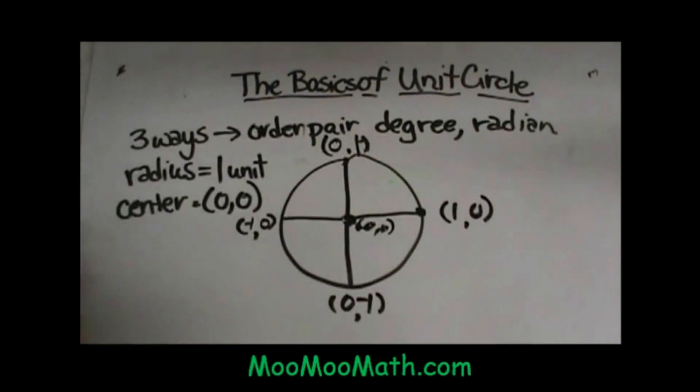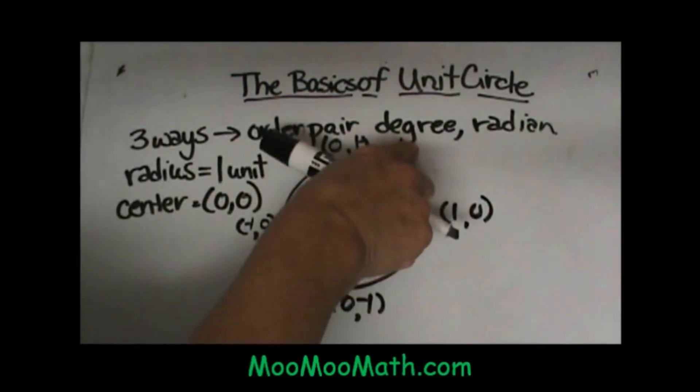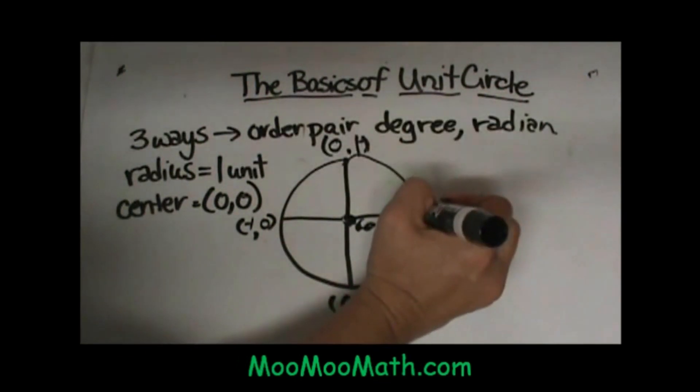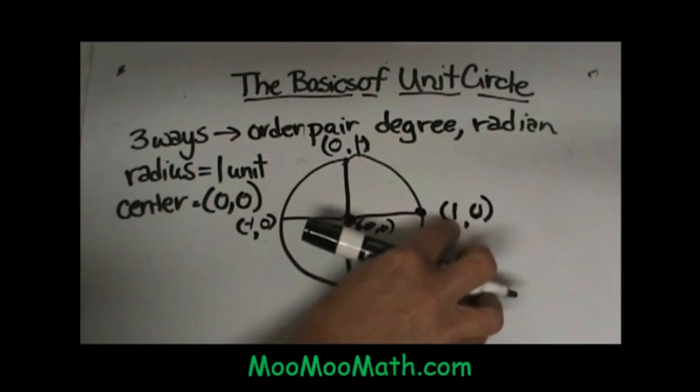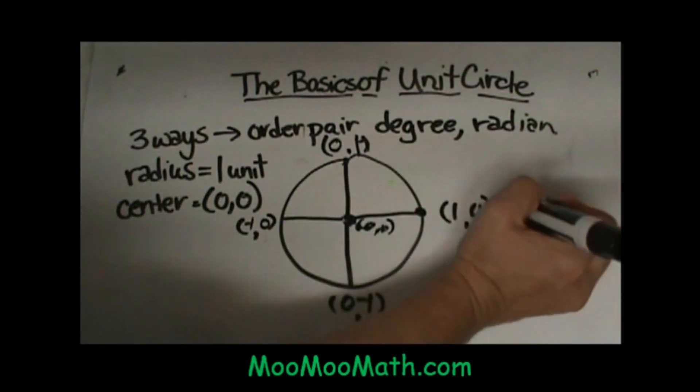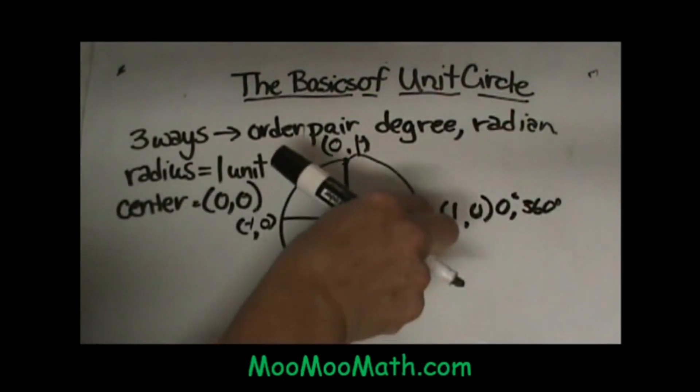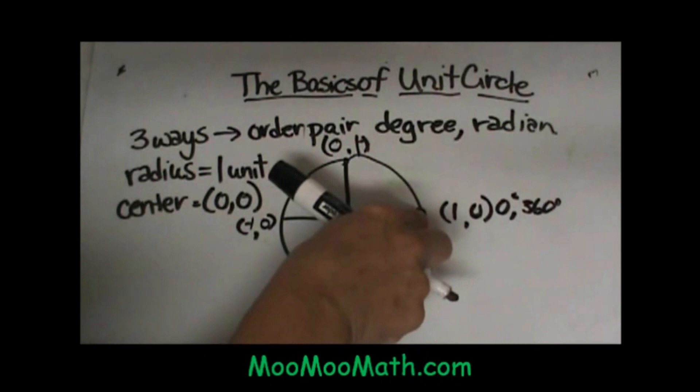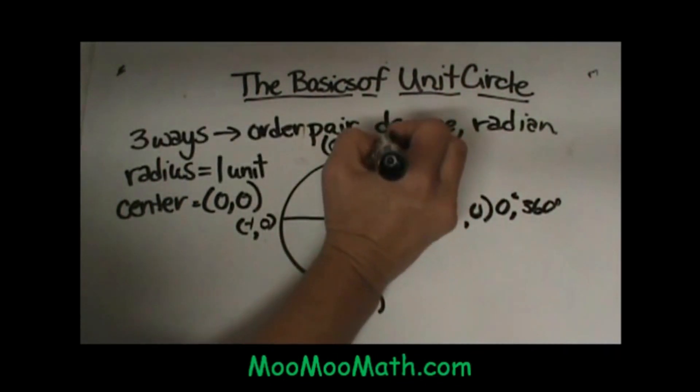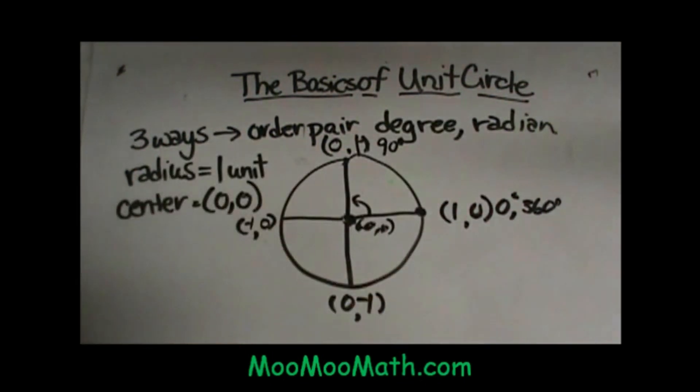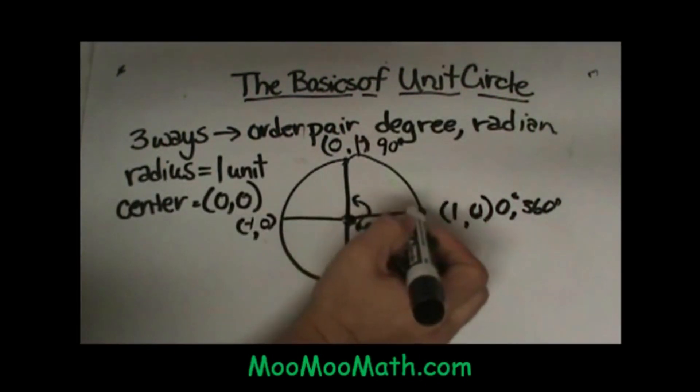Those are the four ordered pairs. Now, let's look at the degrees for each of those four. This point over here on the right, that's (1,0), can be written either as 0 degrees or 360 because a circle, if we made a full circle and came back here, that would be 360 degrees. This point can be written as 90 degrees because we're 90 degrees away from the reference or the x-axis.